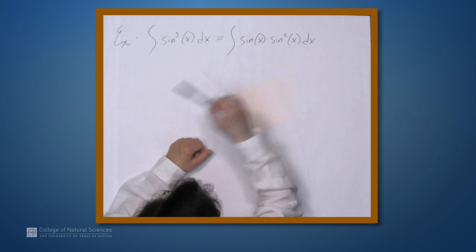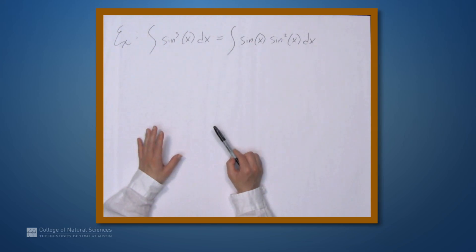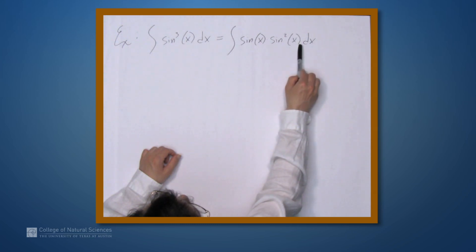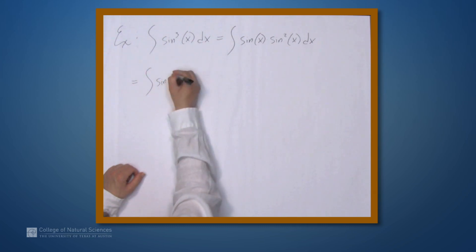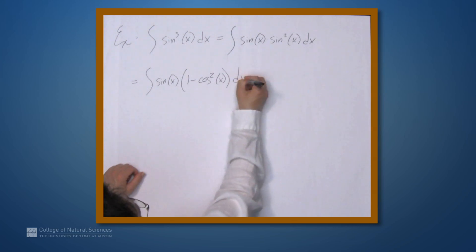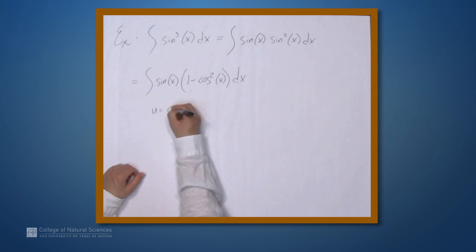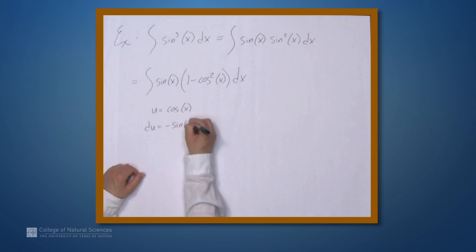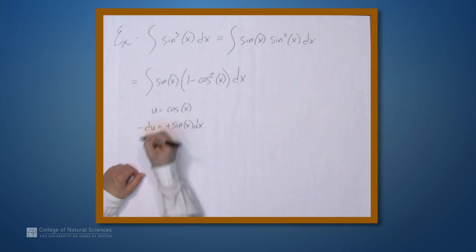Remember from the previous example, sin² alone is difficult because we don't have a cosine sitting in front to make a u-substitution. Well, here we'll make it happen — we have a copy of sine. Let's rewrite sin²x as 1 - cos²x. So we have sinx times (1 - cos²x) dx. We can now let u = cosx, so du = -sinx dx, which means sinx dx = -du.